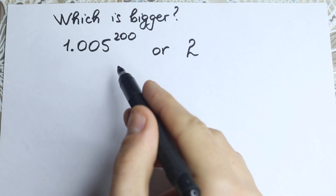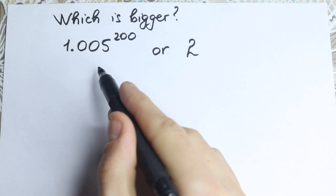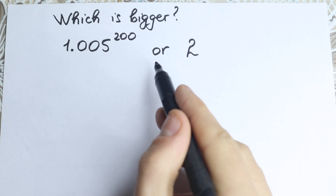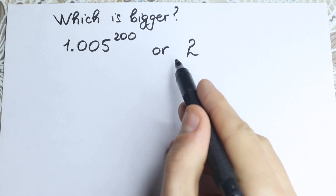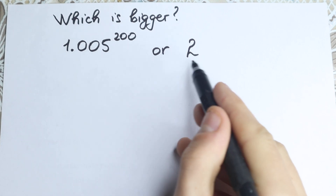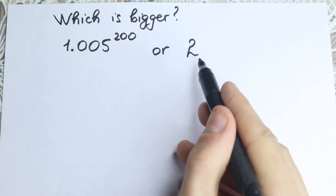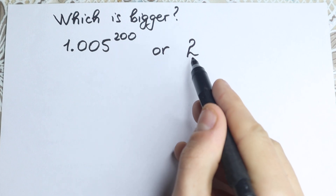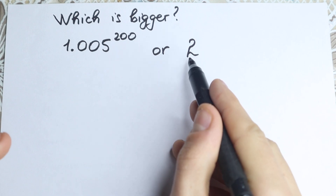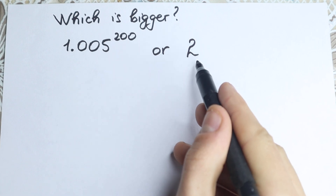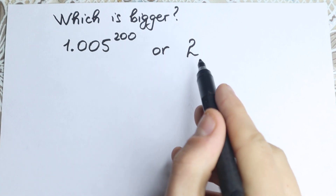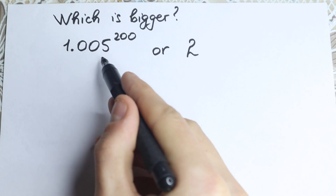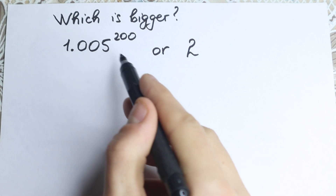On the left hand side we have 1.005 to the power 200, and on the right hand side we have only 2. And if on the right hand side we have a great number — 2, we all know about this number — so how can we tell information about this number on the left hand side?